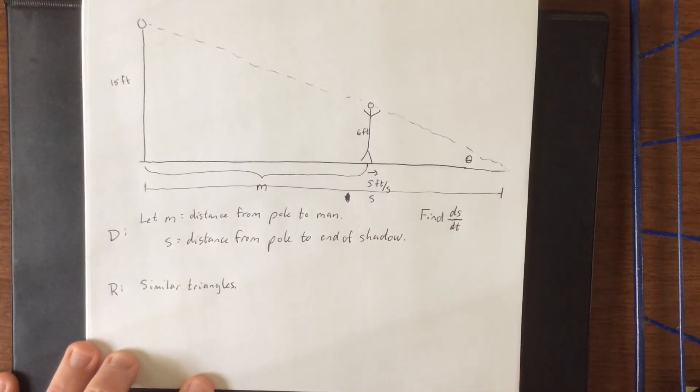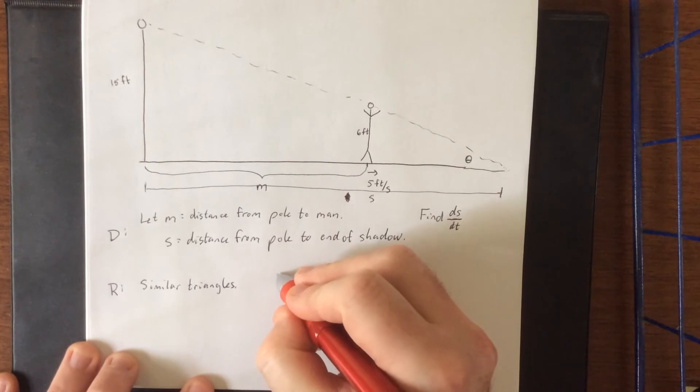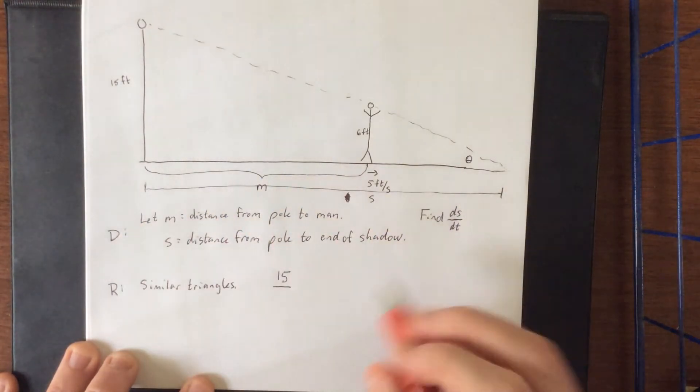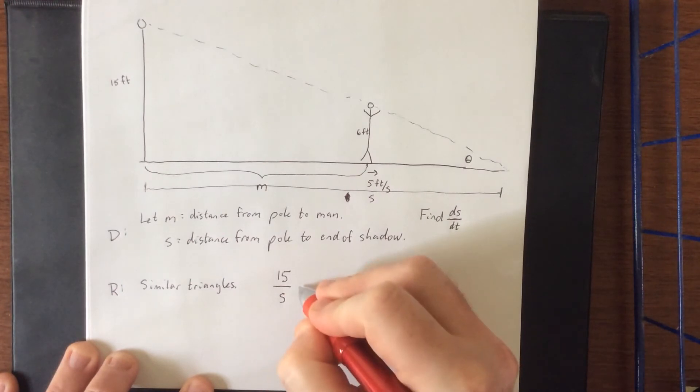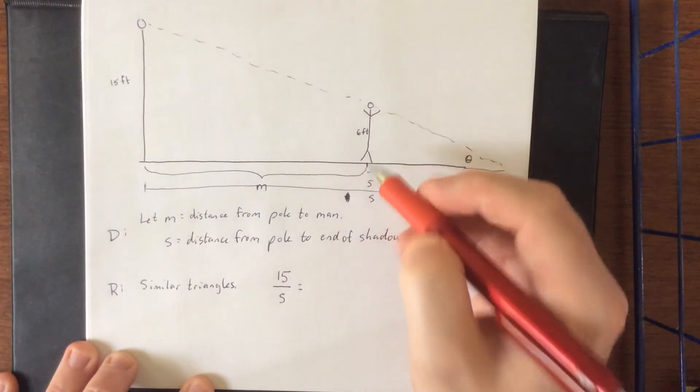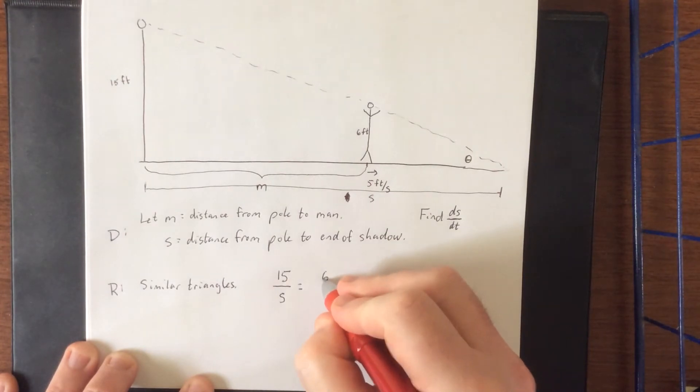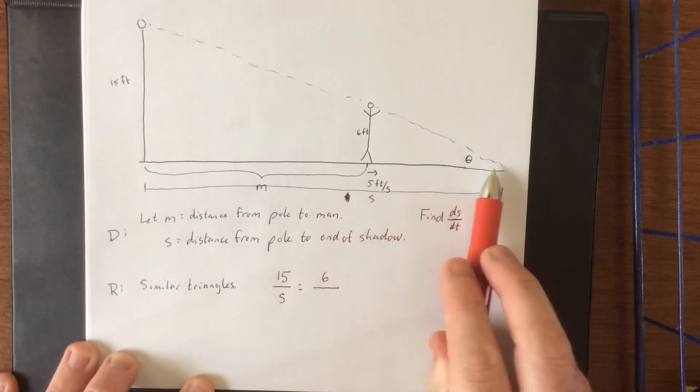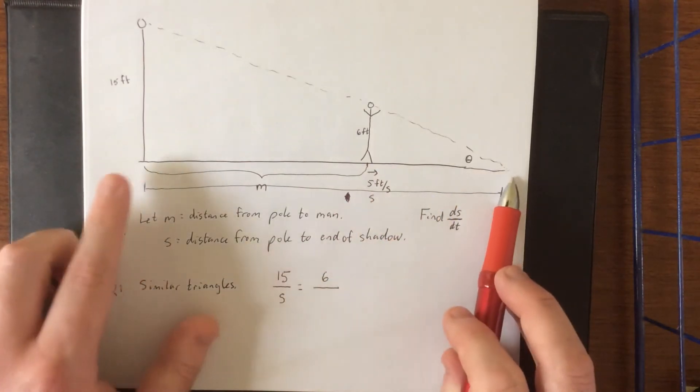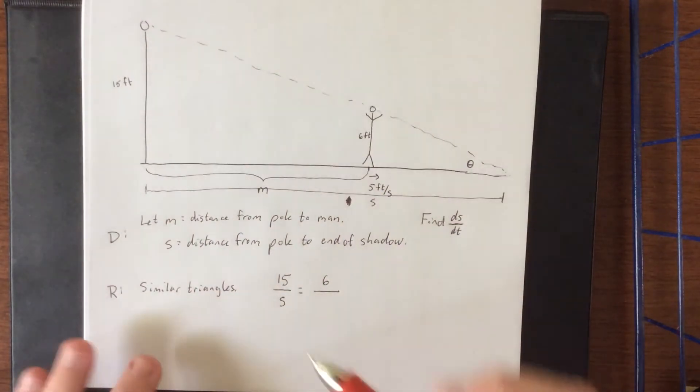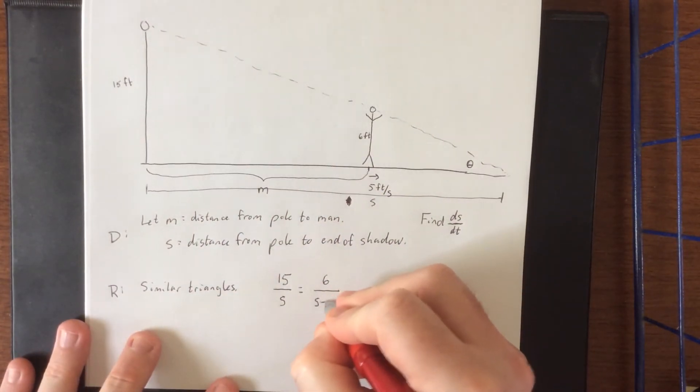We could do the opposite over the adjacent for the big triangle or the opposite over the adjacent for the smaller triangle. So analyzing the opposite over the adjacent for the larger triangle is going to give us the 15 foot tall pole divided by the S for the shadow. This is going to be equal to the opposite side for the smaller triangle, which is our 6 foot man, divided by this distance right here. Now we haven't formally defined this distance, but I noticed that if we take S and we subtract M, we would have the distance that we want. So S minus M.